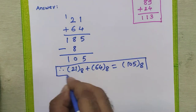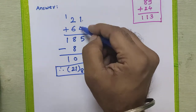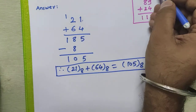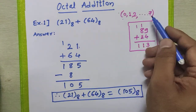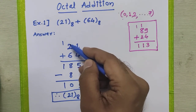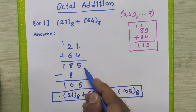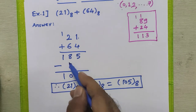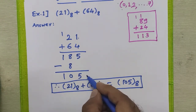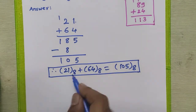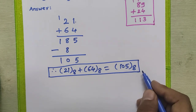To summarize what we did: we added two digits. If the addition of two digits exceeds the last valid digit of the octal number system, we generate a carry. Then, if any invalid digit appears in the result, we subtract the base of the number system from that invalid digit to get the actual answer. So 21 in octal plus 64 in octal equals 105 in octal.